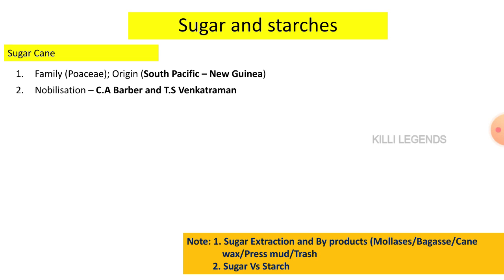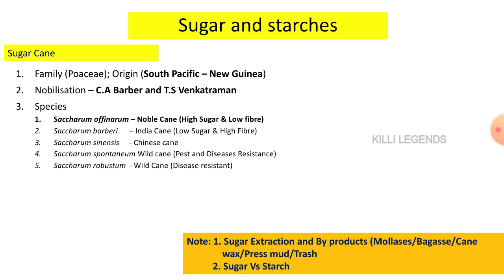The center of origin of sugarcane is the South Pacific, exactly New Guinea. Sugarcane has wild and related species. In Saccharum officinarum, there is the noble cane. The noble cane has high sugar content and low fiber content. There are also some related species with disease and pest resistance.